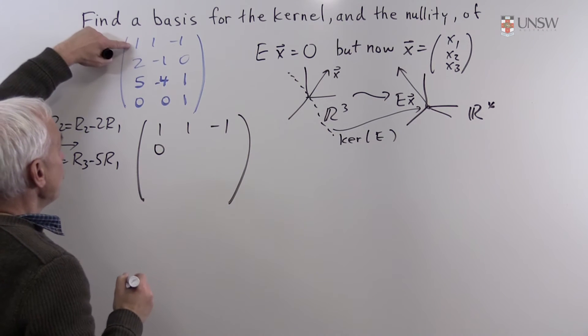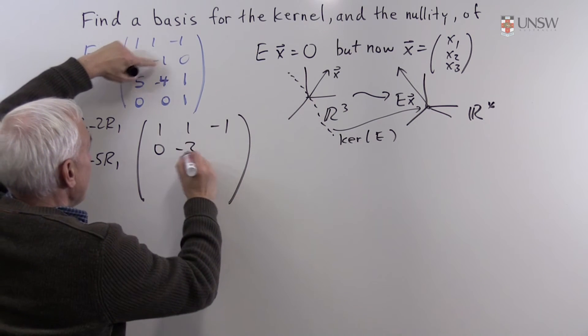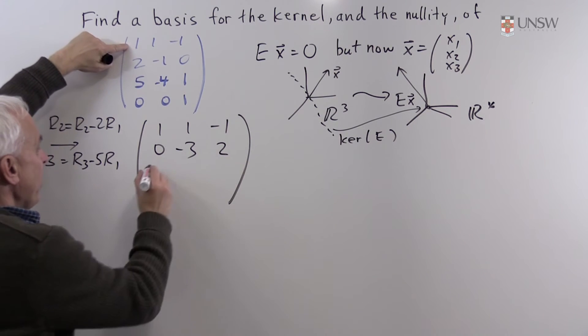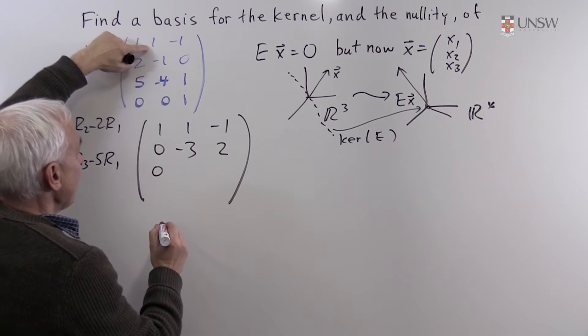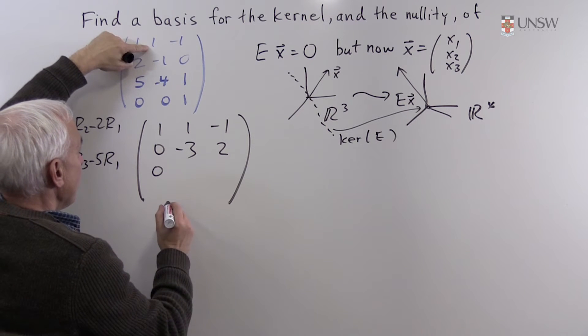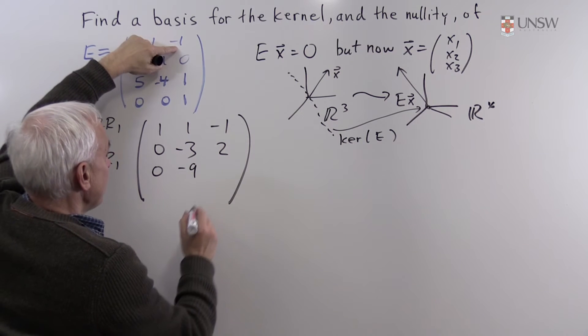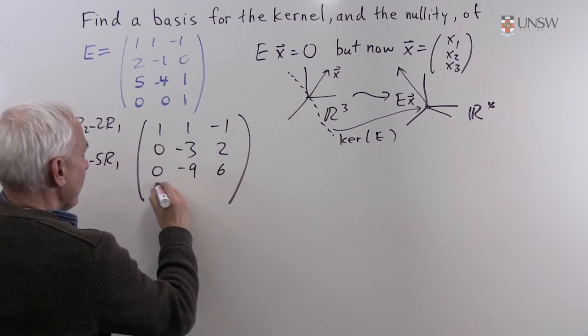This minus 2 times that, minus 3, 2. This minus 5 times that, this minus 5 times that, minus 9. This minus 5 times that, 6. And this just stays where it is.